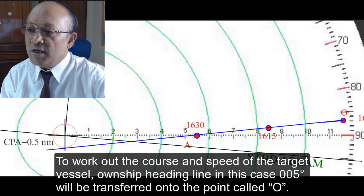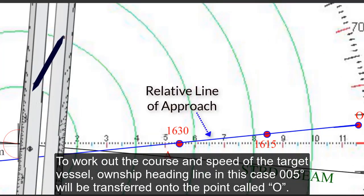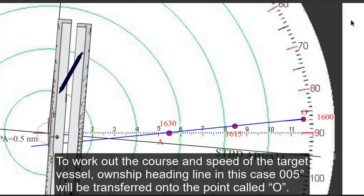To work up the course and speed of the target vessel, own ship heading line, in this case 005 degrees, will be transferred onto the point O.